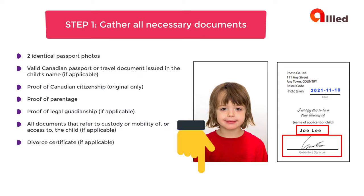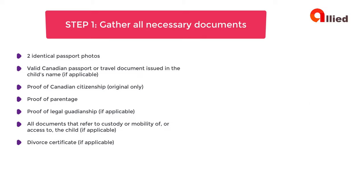You need to submit any valid Canadian passport or travel document issued in the child's name. If the child's passport has a valid visa in it, tell Passport Canada on your form if you need the visa and want the original passport back. If you don't, the visa could be damaged when the previous passport is cancelled.